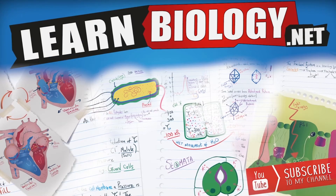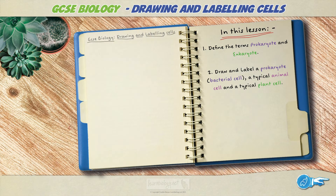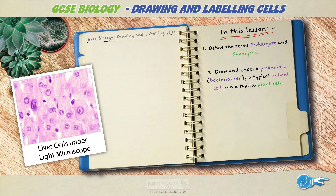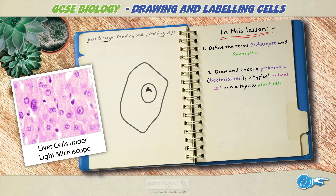Up until now you've learned a little bit about cell theory and of course that cells can be observed with microscopes. So now you need to know how to draw and label cells that you either observe or are shown images of.